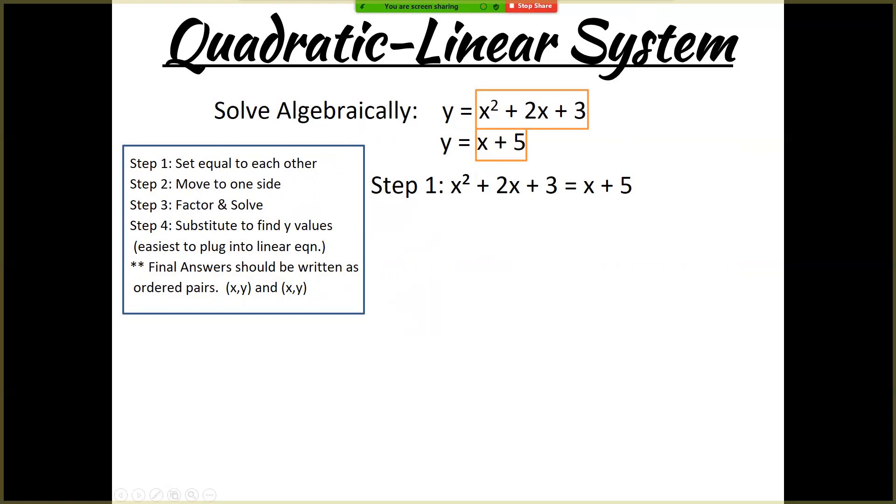So that first step is done for you. The second step, we want to move everything to one side. I always suggest that you keep the x squared positive. So I want to move the x and I want to move the 5. So I'm going to subtract x and subtract 5. I'm going to be real lazy and do both of them in one step. So x squared plus 1x minus 2 equals 0 now.